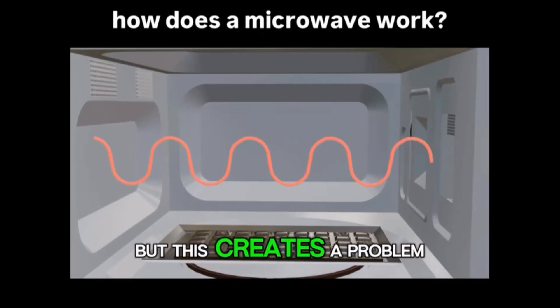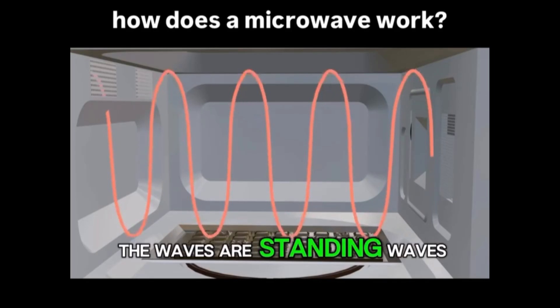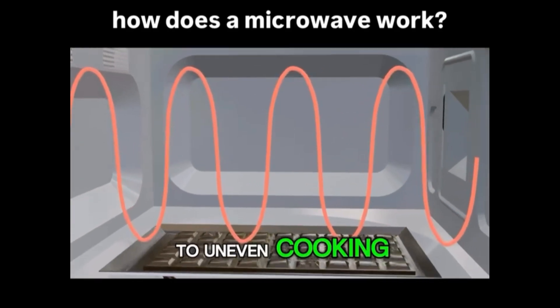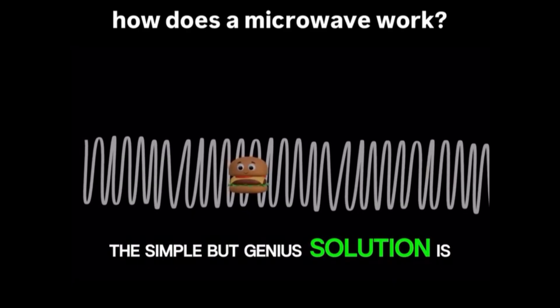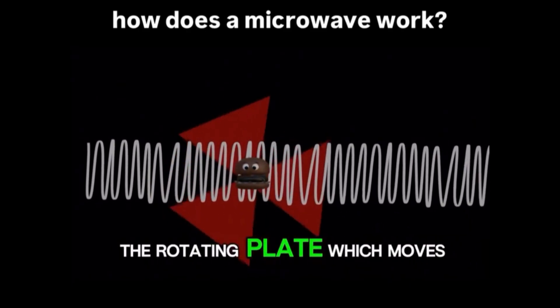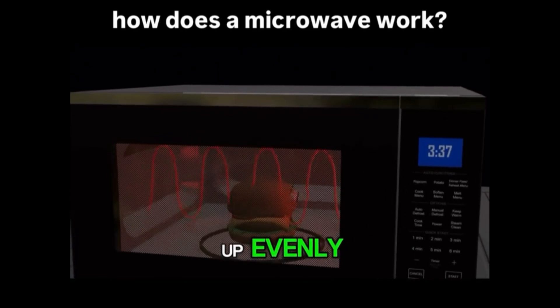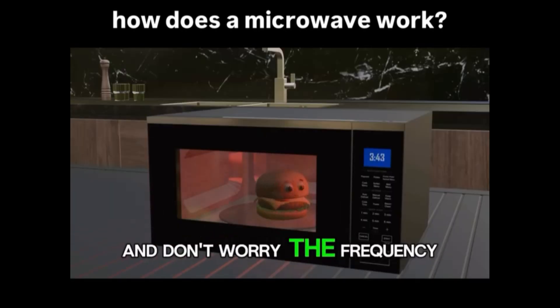But this creates a problem. The waves are standing with hot spots which lead to uneven cooking. The simple but genius solution is a rotating plate which moves your food through all the hot spots so it heats up evenly.